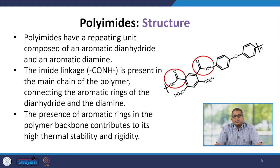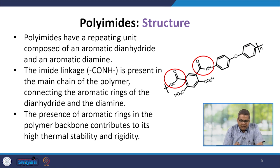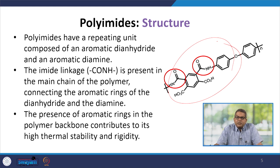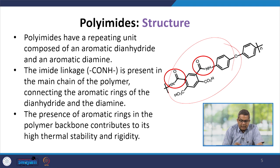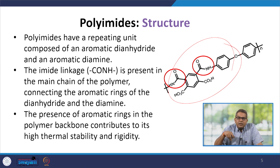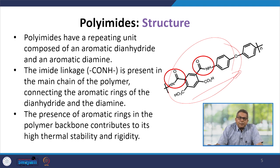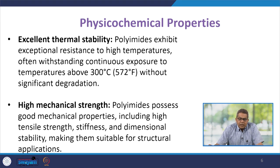When we talk about the structure of polyimides, they have a repeating unit composed of aromatic dianhydrides and aromatic diamines. The imide linkage CO-NH is present in the main chain of the polymer, connecting the aromatic rings of the dianhydride and diamine. The presence of aromatic rings in the polymer backbone contributes to its high thermal stability and rigidity.